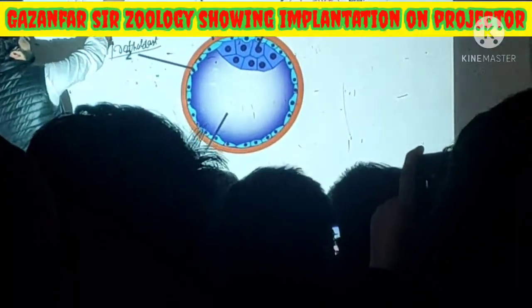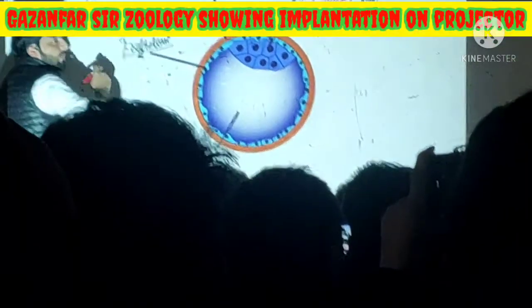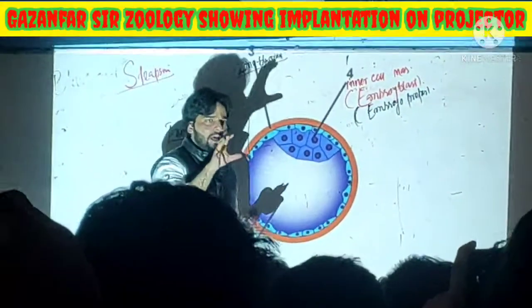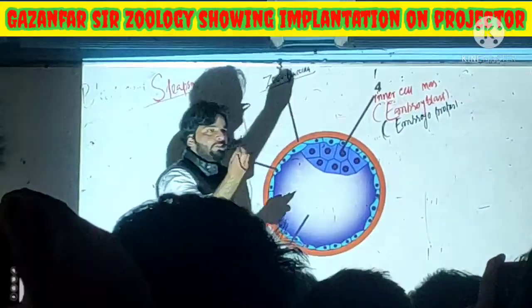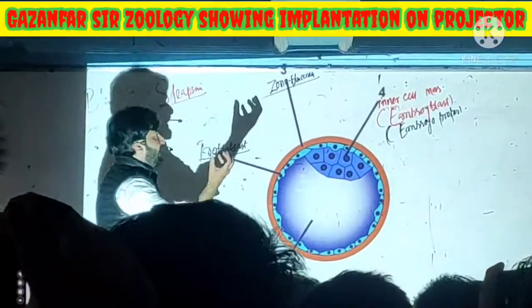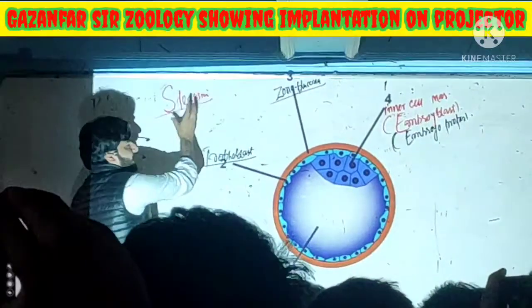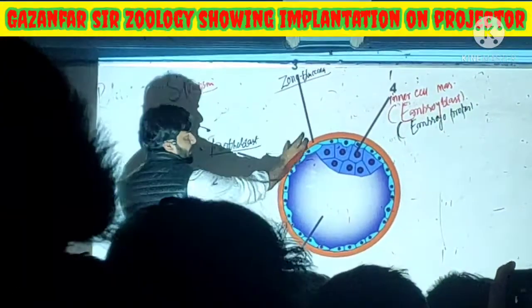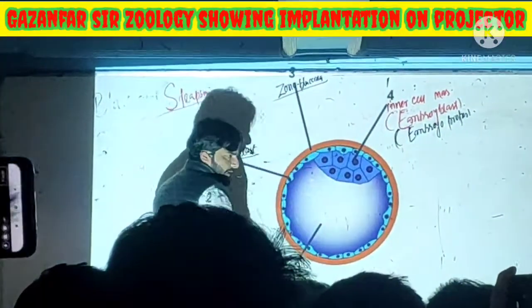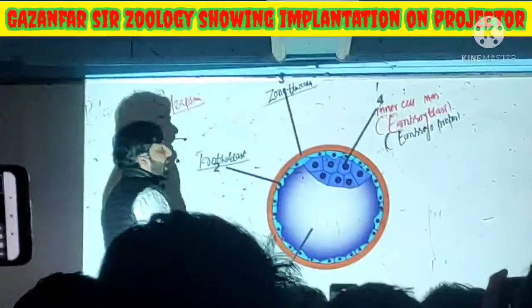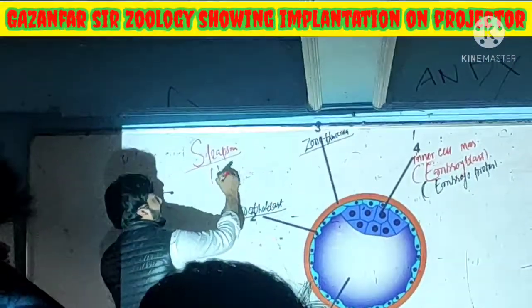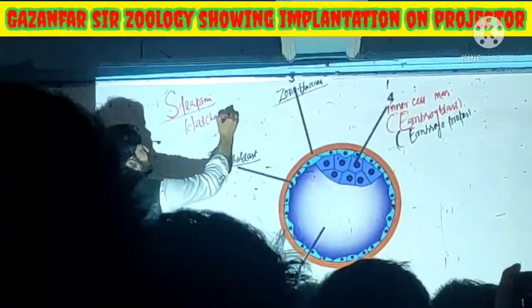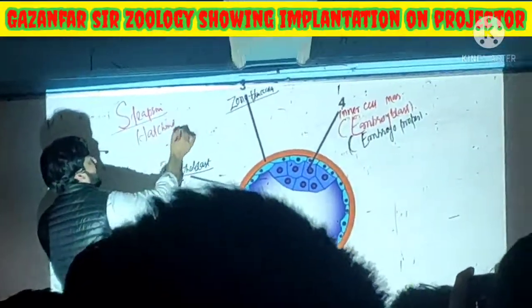The cytotrophoblast cells will produce this enzyme called stapsin. Stapsin will break down the zona pellucida, and that process is called hatching.